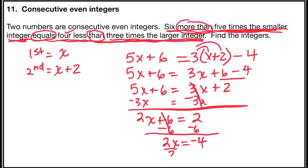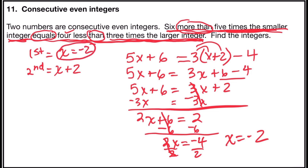Divide both sides by two. Now I'm down to a two-step: subtract six from both sides and divide by two. Six minus six is zero, so 2x equals two minus six, which is negative four. Two divided by two is 1x, and negative four divided by two is negative two. So my first integer is negative two. My second integer will be negative two plus two, which is zero. My first integer is negative two and my second integer is zero.